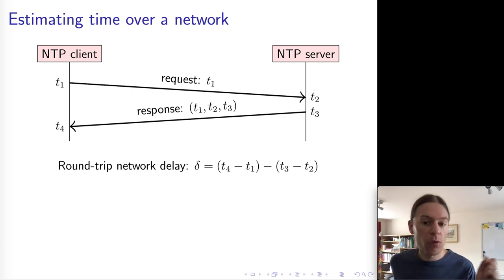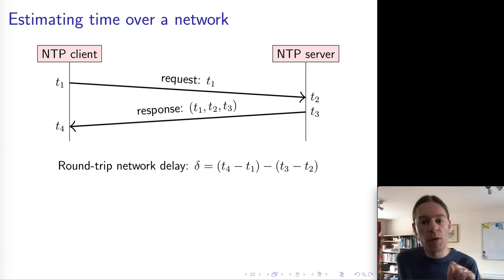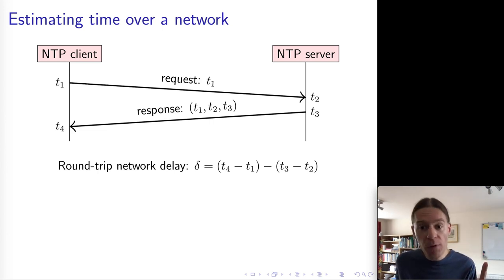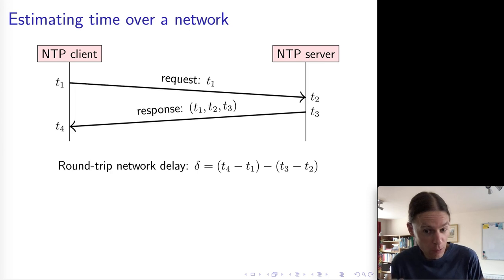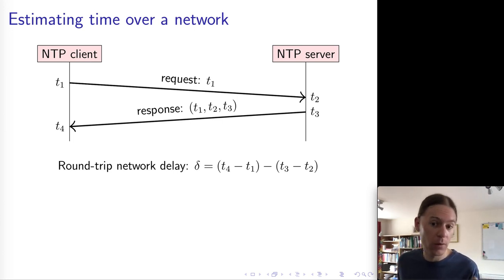We can work out how long the messages spent traveling through the network — the total network delay delta. Delta equals (t4 - t1), the total elapsed time from the client's perspective, minus (t3 - t2), the processing time on the server. The remaining time is the total time spent in the network by both the request and the response combined. We don't know the breakdown between the two directions, and measuring one-way network latency requires synchronized clocks — which is exactly what we're trying to build — so we can only measure the sum of the two network latencies.